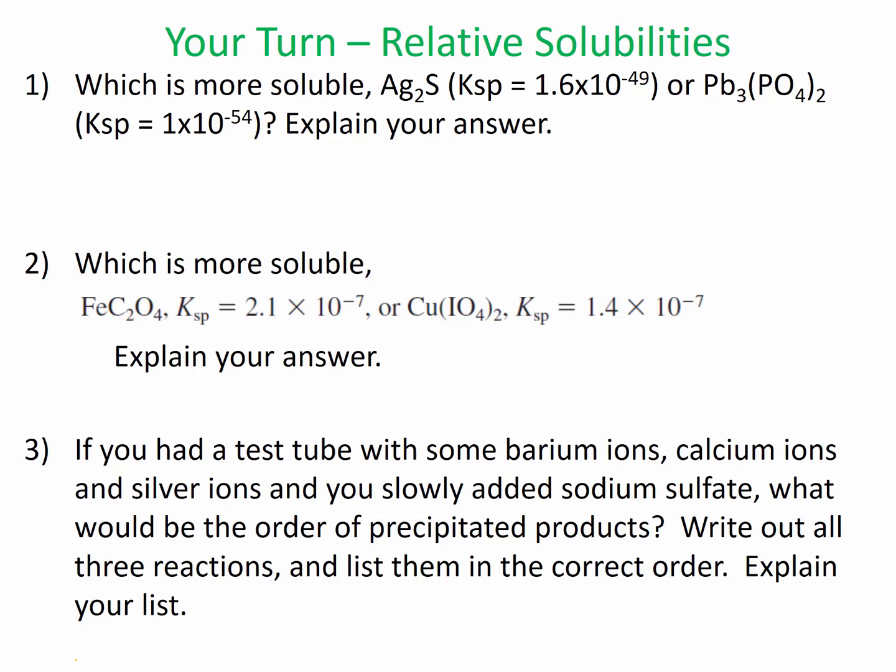And then in number 3, it's asking you if you had a test tube with barium ions, calcium ions, and silver ions, and you slowly added sodium sulfate, so you're essentially adding sulfate ions, what would be the order of precipitated products?